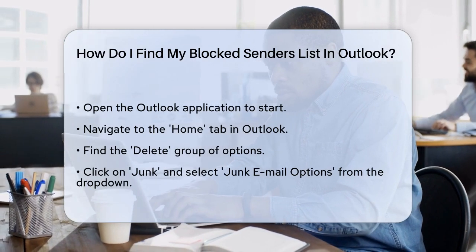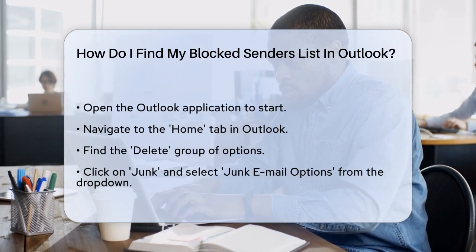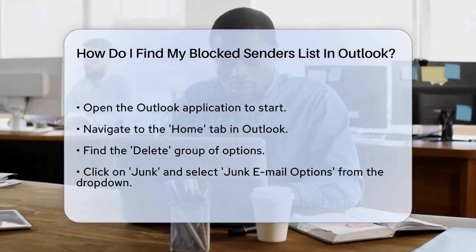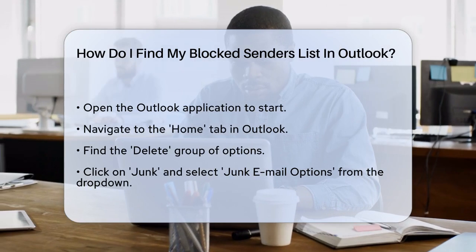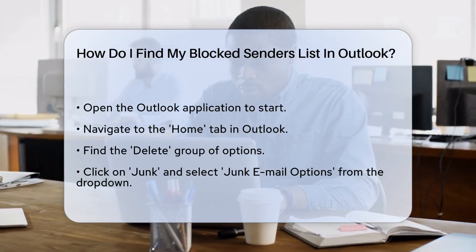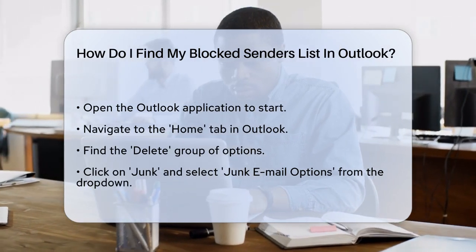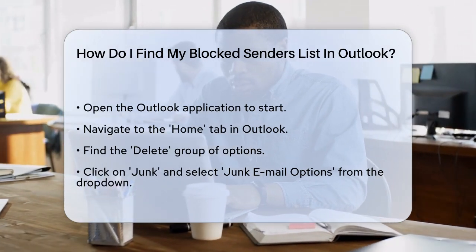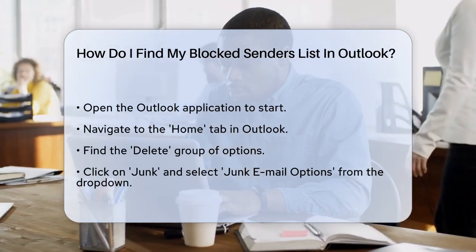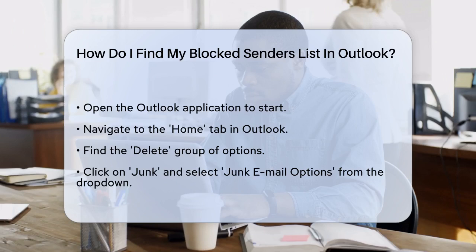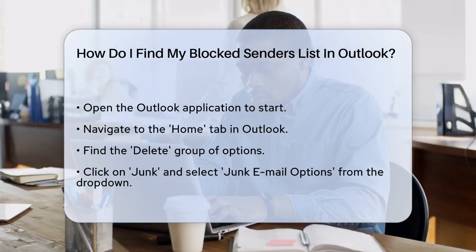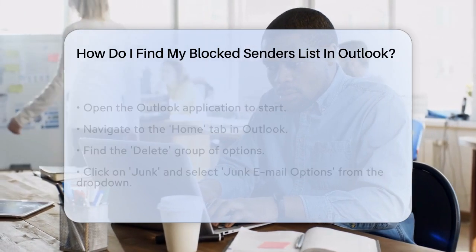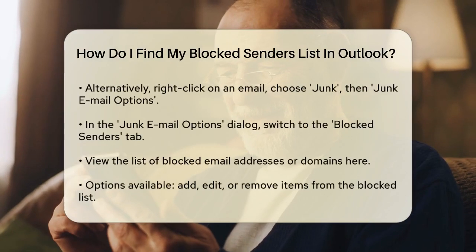First, you need to open your Outlook application. Once you're in, navigate to the Home tab. Here, you'll find a group of options labeled Delete. Within this group, click on Junk and then select Junk Email Options from the drop-down menu.